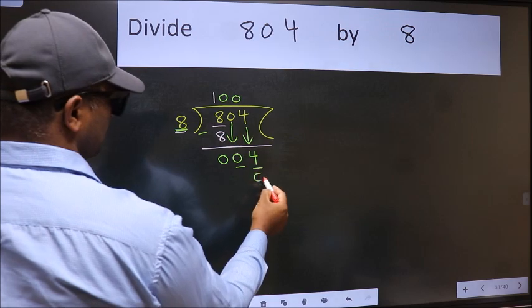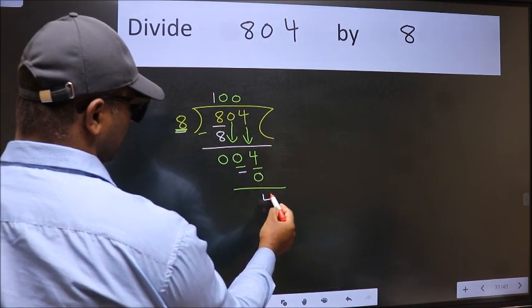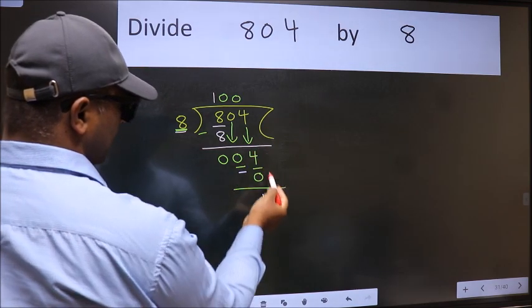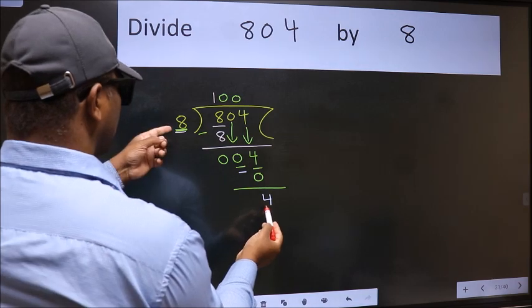So 8 into 0 is 0. Now we subtract, we get 4. Over here we did not bring any number down, and 4 is smaller than 8.